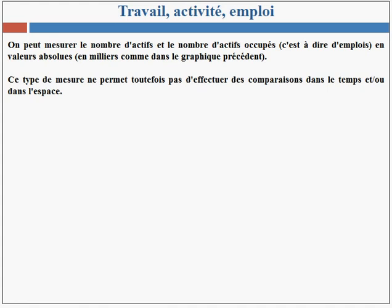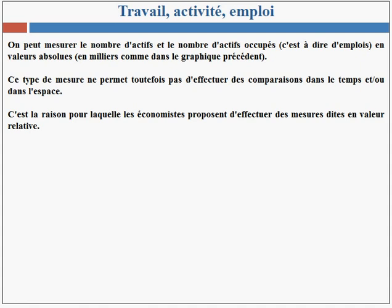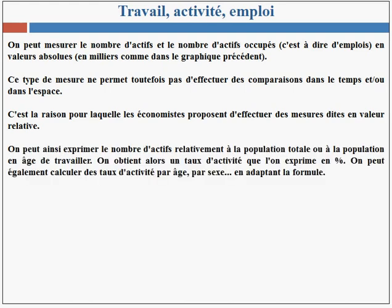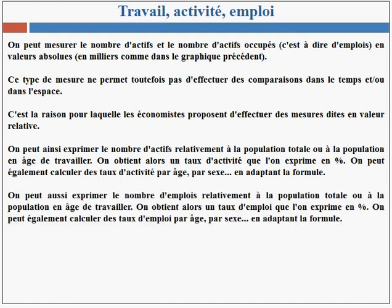Ce type de mesure ne permet toutefois pas d'effectuer des comparaisons dans le temps et/ou dans l'espace. C'est la raison pour laquelle les économistes proposent d'effectuer des mesures dites en valeur relative. On peut ainsi exprimer le nombre d'actifs relativement à la population totale ou à la population en âge de travailler. On obtient alors un taux d'activité que l'on exprime en pourcentage. On peut également calculer des taux d'activité par âge, par sexe, en adaptant la formule. On peut aussi exprimer le nombre d'emplois relativement à la population totale ou à la population en âge de travailler.